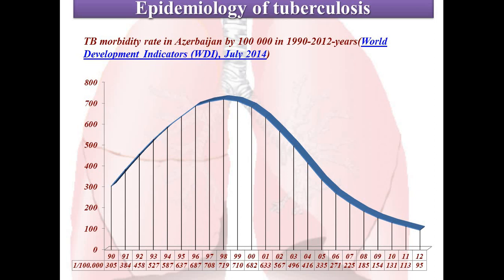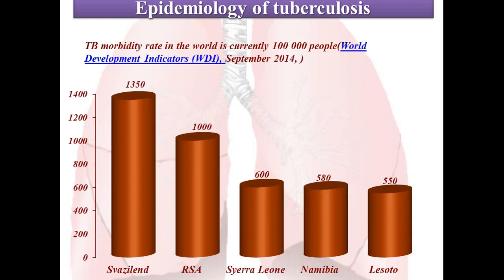The TB morbidity rate in Azerbaijan per 100,000 people has ranged over these years according to information from the World Development Indicators — an independent organization. As you can see from this diagram, the amount of TB disease in Azerbaijan in the 19th century and now is stabilized in our country.